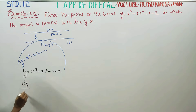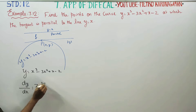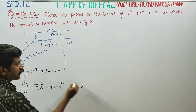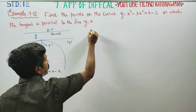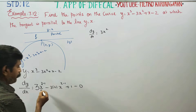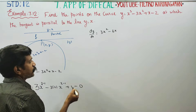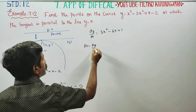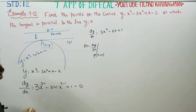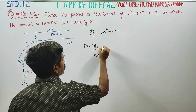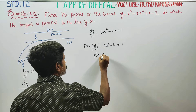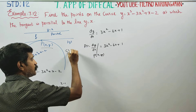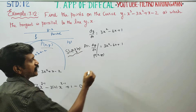If we differentiate the curve equation, dy/dx equals 3x² minus 6x plus 1. This is the slope of the tangent at any point (x, y) on the curve. M is called the slope of the tangent. This is result number 1.